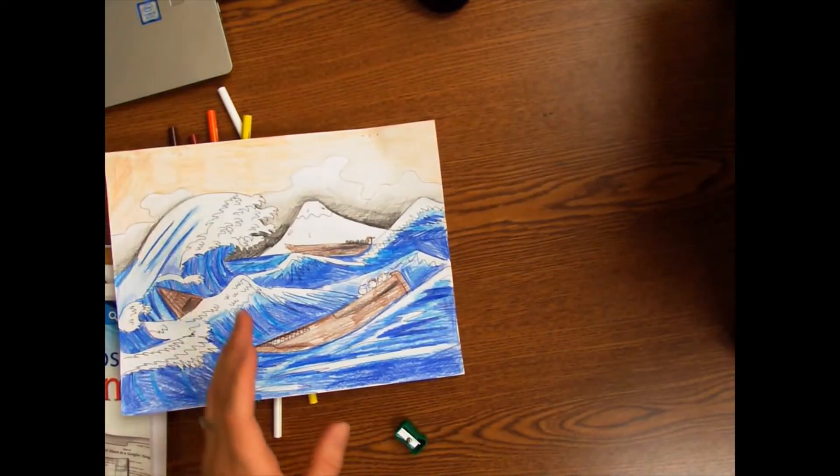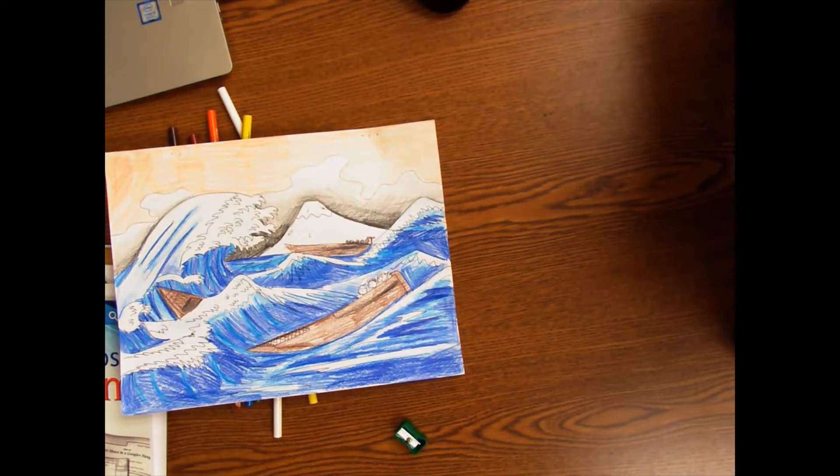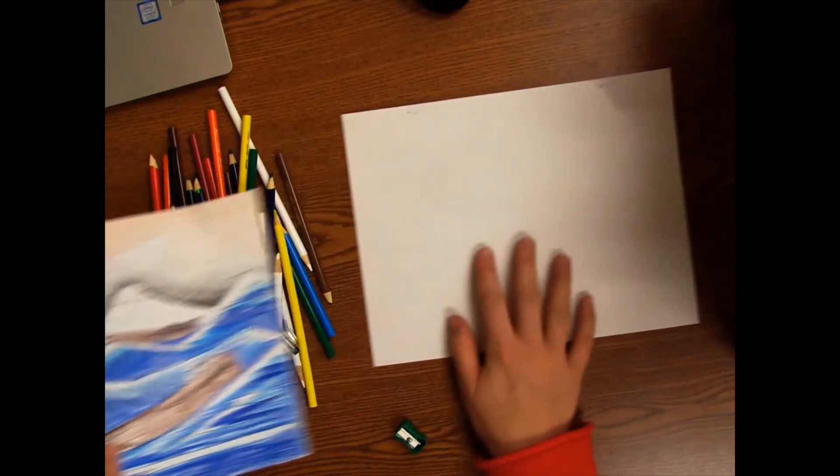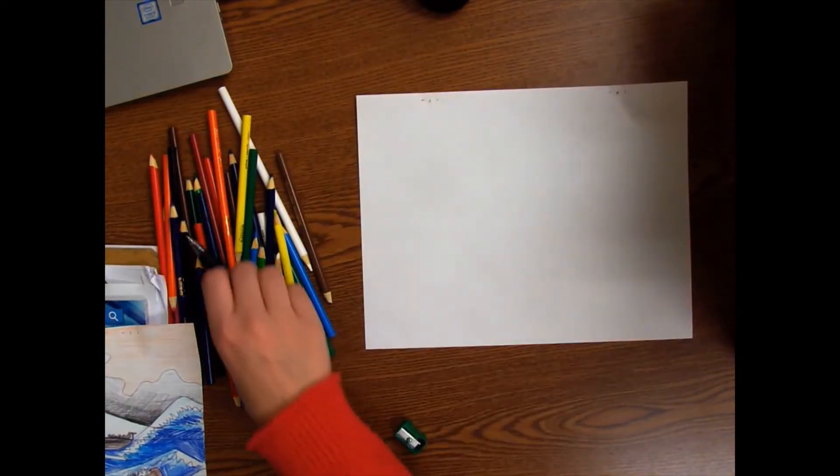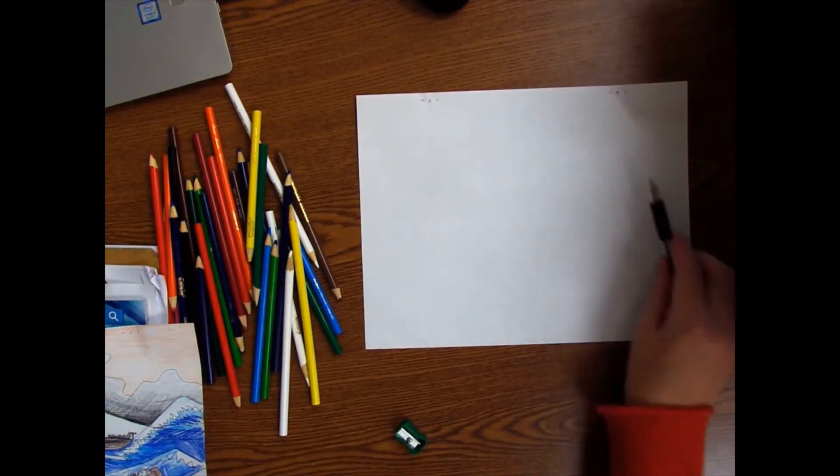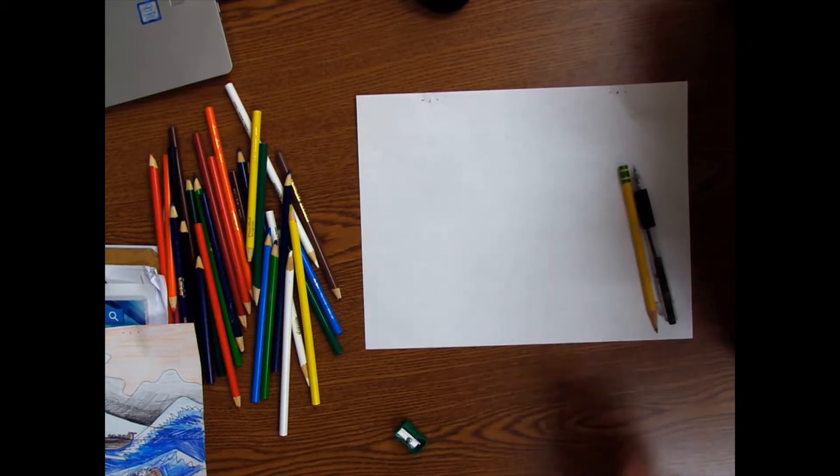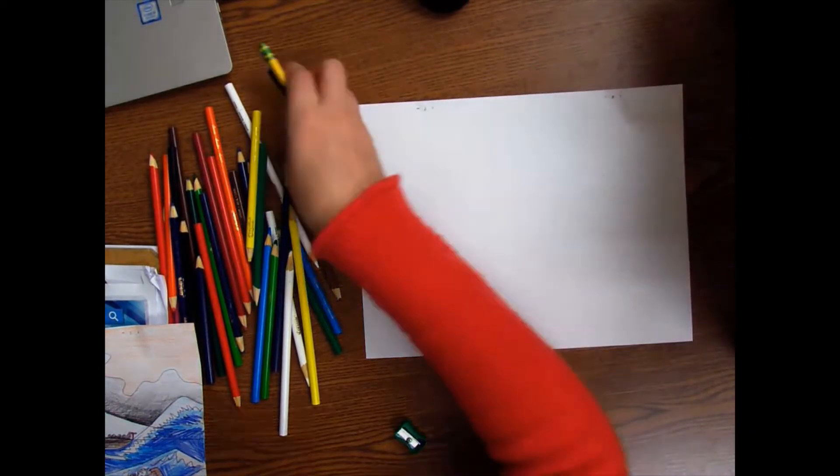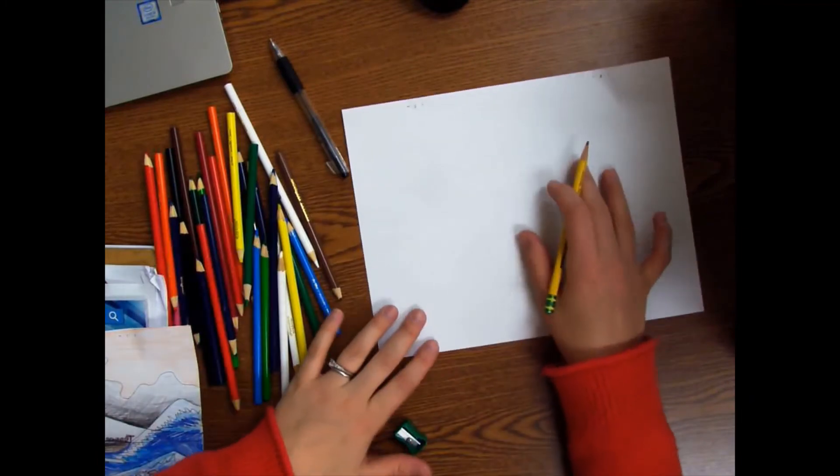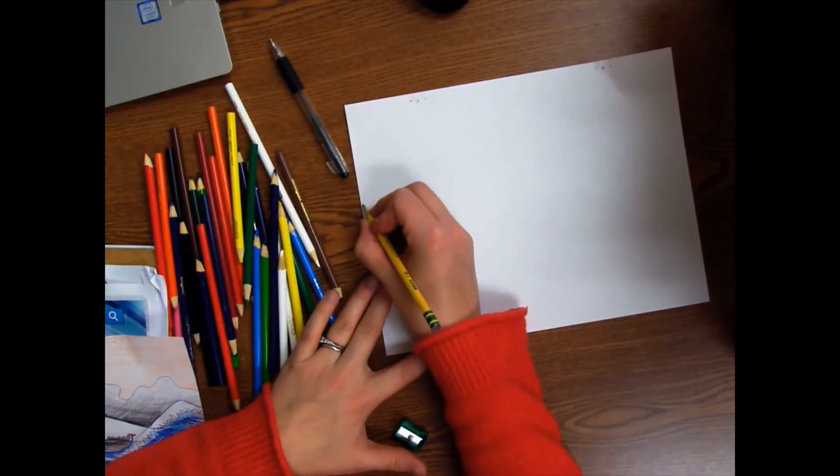That being said, let's get started. The first thing we need is our paper. I recommend you put your paper side to side. You'll need a pen and a pencil. I'm going to start with pencil and then I'll trace with pen, and then I'll use my colored pencils to color in.